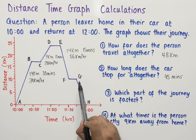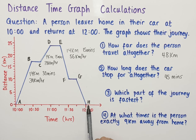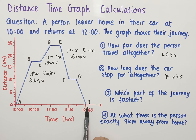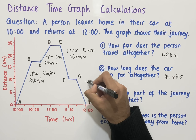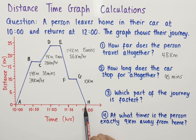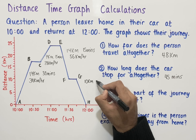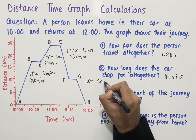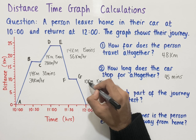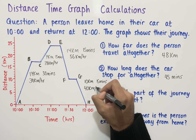Finally, we work out the speed between G and H. At G the car is 10 kilometers from home, and at H it is 0 kilometers from home. So 10 kilometers have been traveled in 15 minutes — at G it's 11:45 and at H it's 12:00. Multiplying both sides by 4 gives us 40 kilometers per hour.